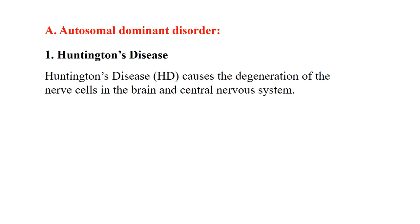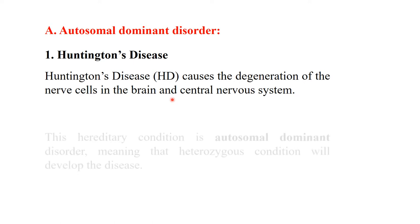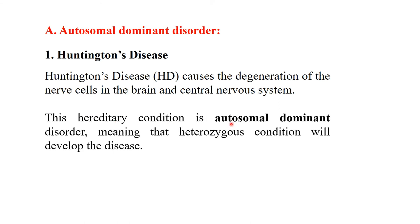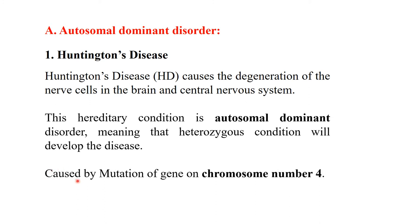Now starting with autosomal dominant disorders, the first example is Huntington's disease (HD). Huntington's disease causes degeneration of nerve cells in the brain and central nervous system. It is a disease of the nervous system and is an autosomal dominant disorder, meaning the heterozygous condition will develop the disease. This disease is caused by a mutation of a gene on chromosome number 4.